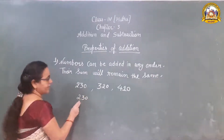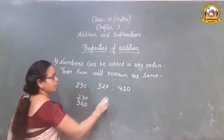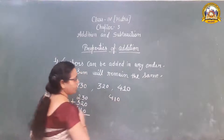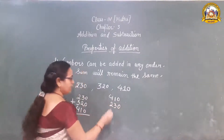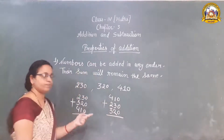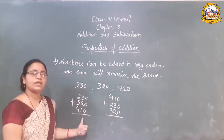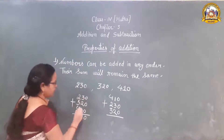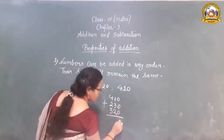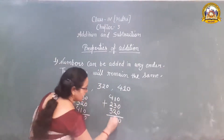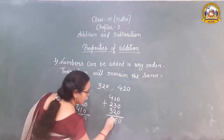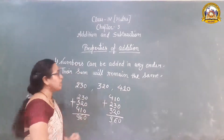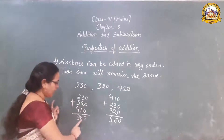Suppose we write 230 on top, then 320, then 410 and add them. Now another order: 410 on top, 230 and 320 at the bottom. There is no particular sequence. We can arrange the numbers in any order and add. 0, 3 plus 3 is 6. 3 plus 2 is 5, plus 4 is 9. 0, 3 plus 1 is 4, plus 2 is 6, plus 3 is 9. Check both answers — both answers are equal. So their sum will remain the same regardless of the order.